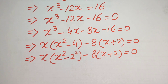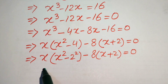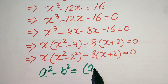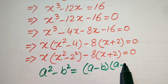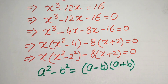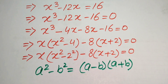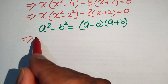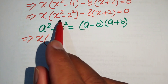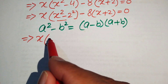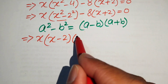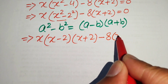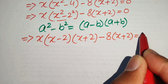We apply the difference of squares identity: a squared minus b squared equals (a minus b)(a plus b). Applying this to (x squared minus 2 squared), the equation becomes x(x minus 2)(x plus 2) minus 8(x plus 2) equals 0.